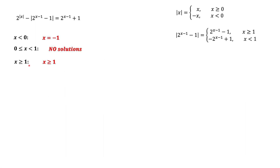Combining all solutions: x = −1 from the first interval, and any x ≥ 1 from the third interval. These together form the complete solution set of the original equation.